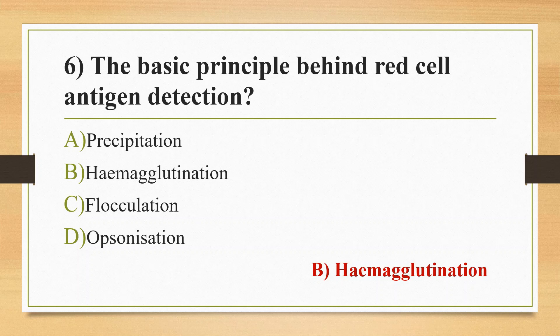Moving to other options: option A, precipitation, is based on the interaction between antigen and antibody where two soluble reactants come together to make one insoluble product — the precipitate. Flocculation is a reaction between a colloidal antigen and an antibody resulting in the formation of flaky, coarse immune complexes. Opsonization is an important process in host defense where particles or complexes are made readily ingestible for uptake by phagocytic cells. Specific serum proteins known as opsonins coat particles and trigger ingestion.